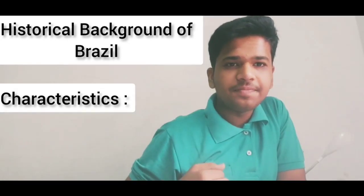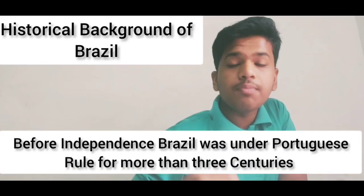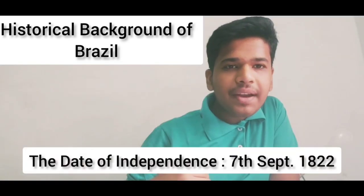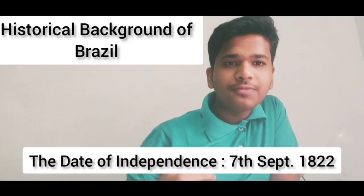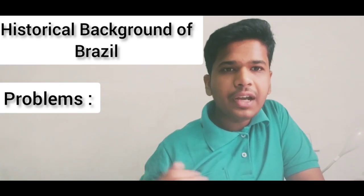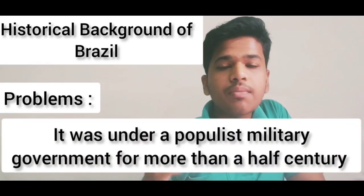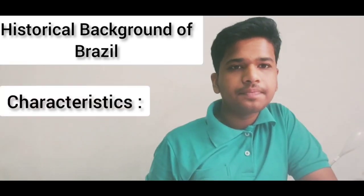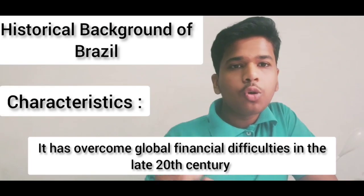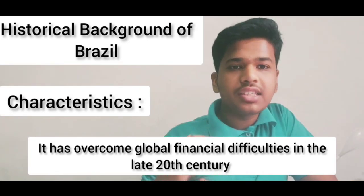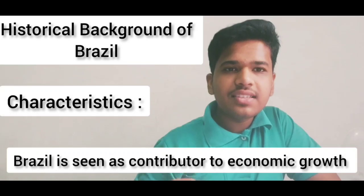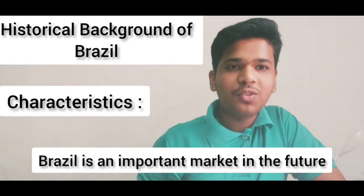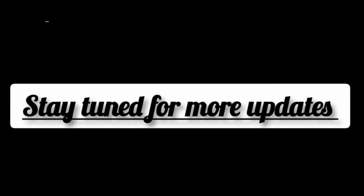Struggle Background of Brazil: Before independence, Brazil was under Portuguese rule for more than three centuries. Brazil got independence on 7th September 1822. Problems after independence: Brazil was under a populist military government for more than half a century. Characteristics of Brazil: Brazil has overcome global financial difficulties in the late 20th century, is seen as a contributor to economic growth, and is considered an important market for the future.